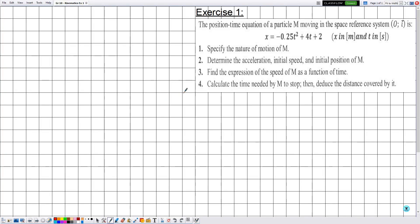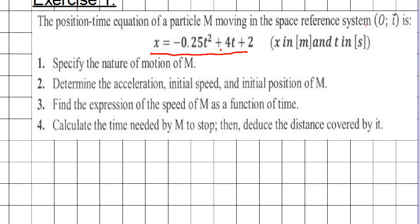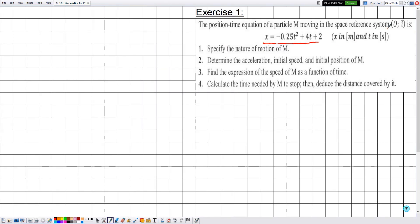Hello everyone. In this new video we are going to solve exercise number one for grade 10 in the chapter of kinematics. The position-time equation of a particle M moving in the space reference system OI is given by x = -0.25t² + 4t + 2. Note that both parameters x and t are given in SI units: x is in meters and t is in seconds.